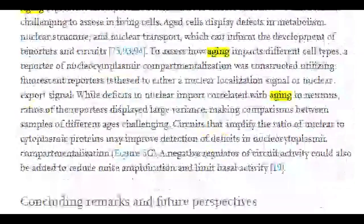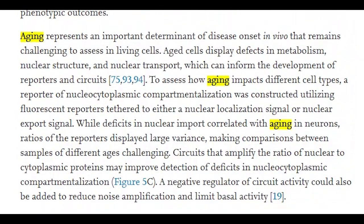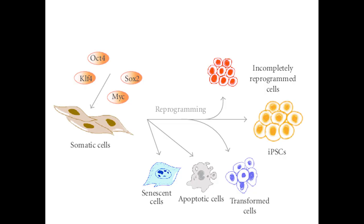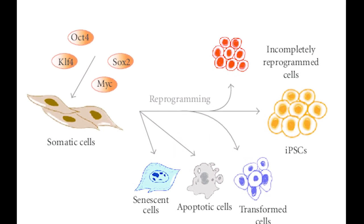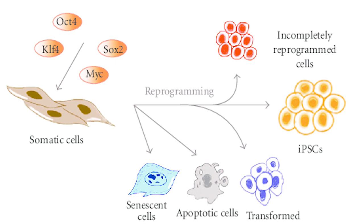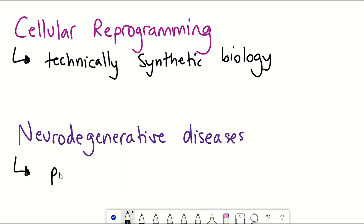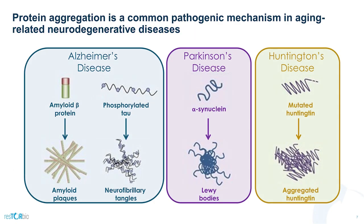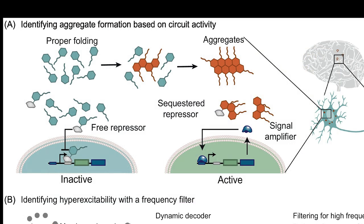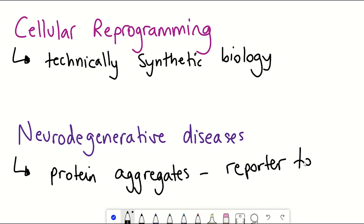To quote from a review article: ageing represents an important determinant of disease onset in vitro that remains challenging to assess in living cells. Aged cells display defects in metabolism and nuclear structure, which can inform the development of reporters and circuits. For example, you could design a reporter to aid in the identification of cells that have successfully reprogrammed. Another area of interest in the ageing field is treating neurodegenerative diseases such as Alzheimer's disease. Whilst it's still up for debate as to the exact causes, one of the hallmarks is the presence of protein aggregates — and you can build a gene circuit that enables the expression of reporters in a cell when there are protein aggregates, which you could then use to screen for drugs that prevent aggregation.